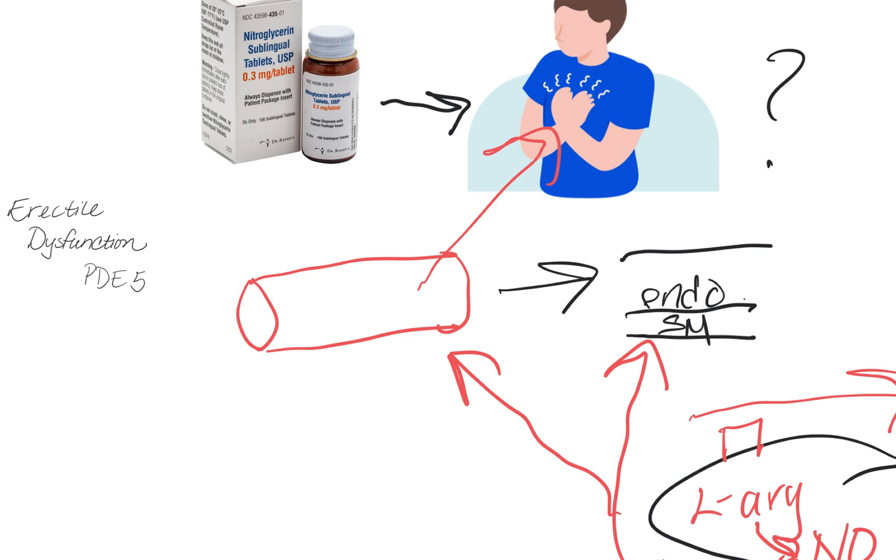We should also be careful of it with anyone with cardiac insufficiency or abnormalities because of reflex tachycardia. When we have a huge amount of vasodilation, the heart works a little bit harder and beats a little bit faster to try to regulate and smooth out our blood pressure.